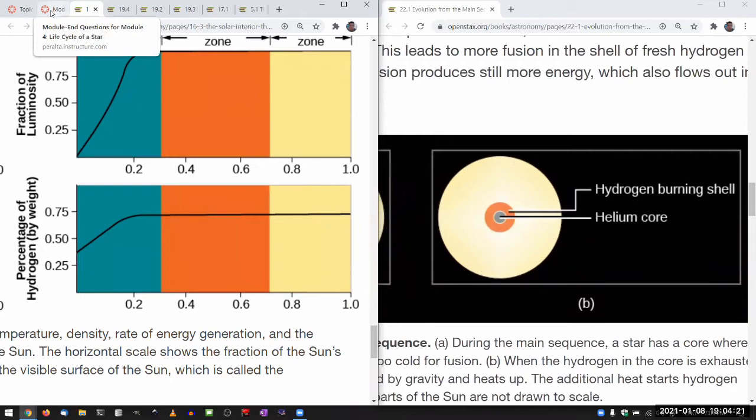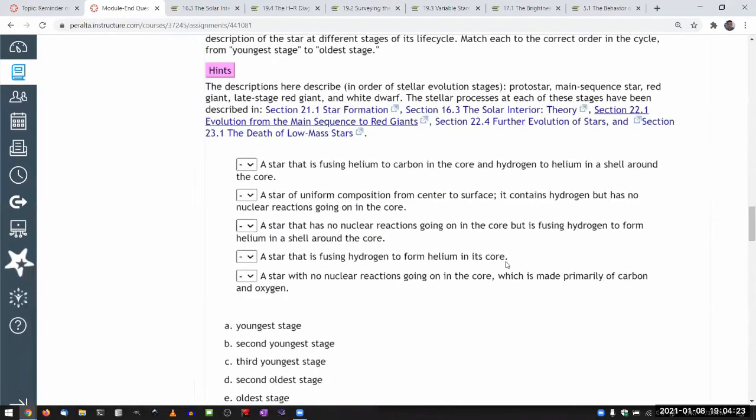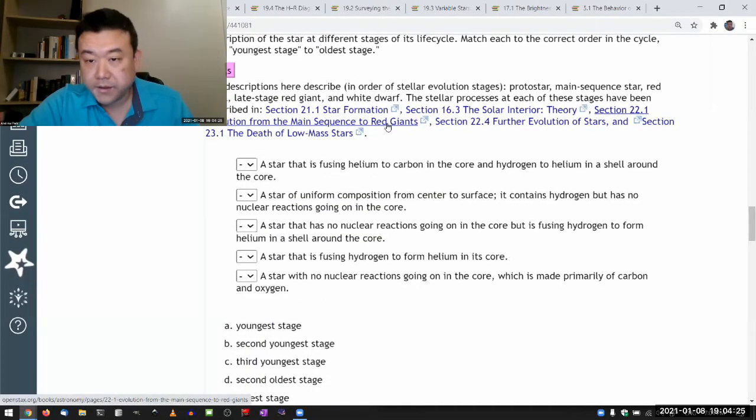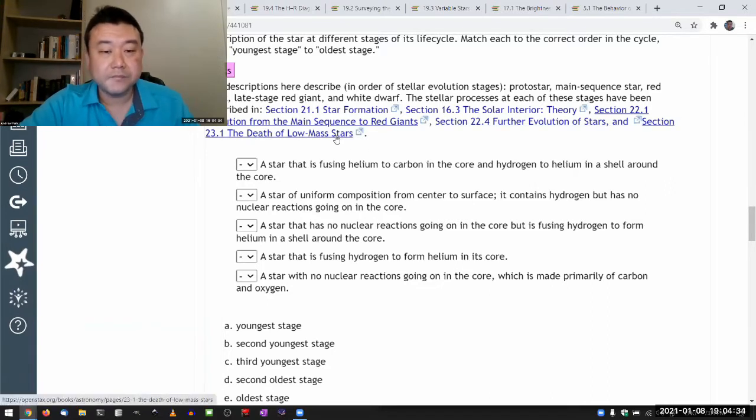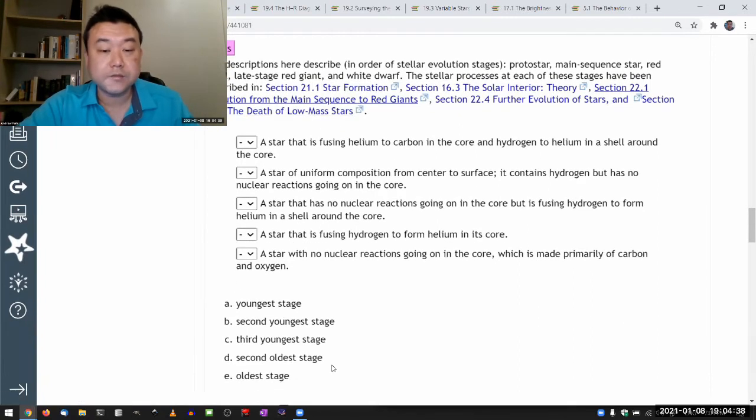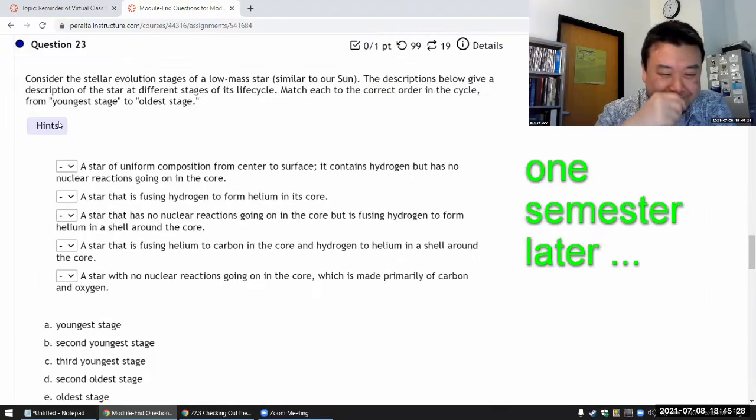So that's going on to red giant. This is the late stage red giant. I'm gonna fix this link. And this is what's going to be the oldest stage white dwarf. So I'm gonna have to do some rough ordering and I might need to change things around a little bit.